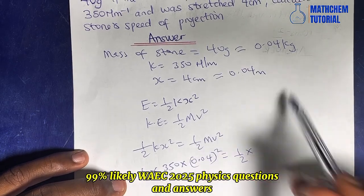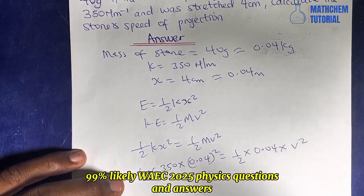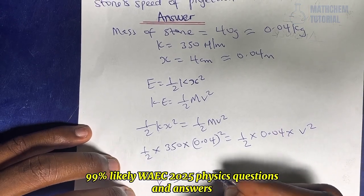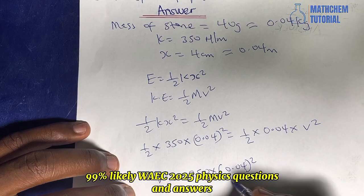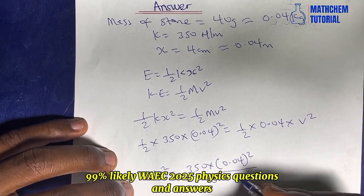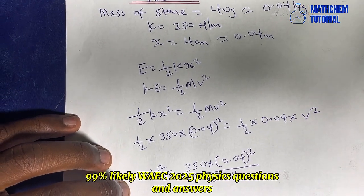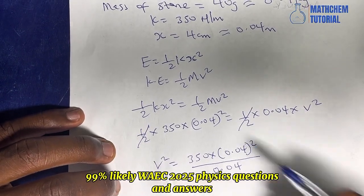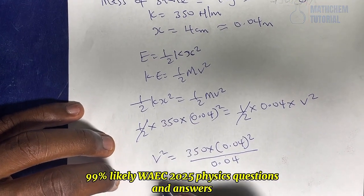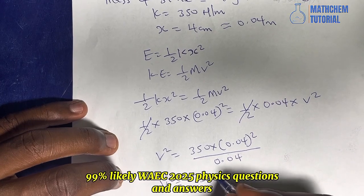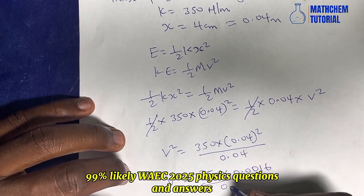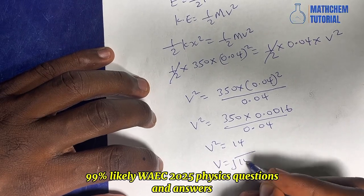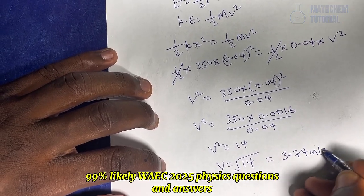So v² = (350 × 0.0016) / 0.04 = 0.56 / 0.04 = 14. Therefore v = √14 = 3.74 m/s. That is the stone's speed of projection.